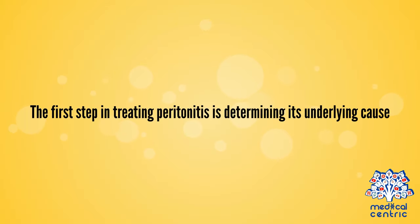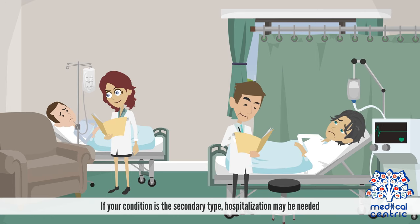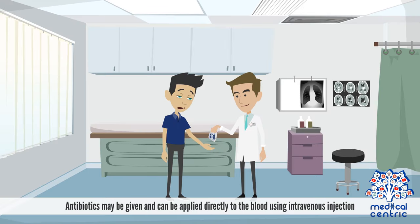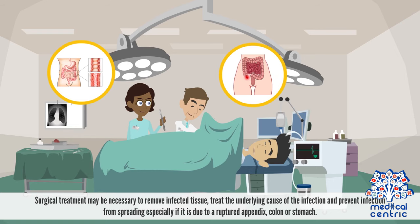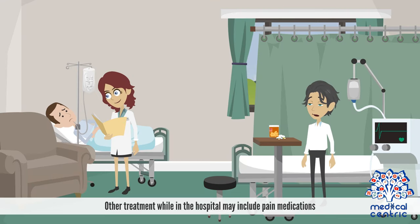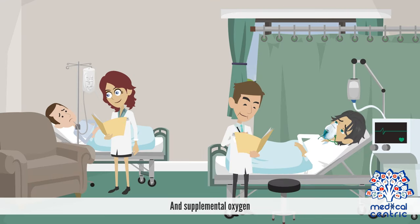The first step in treating peritonitis is determining its underlying cause. If your condition is the secondary type, hospitalization may be needed. Antibiotics may be given and can be applied directly to the blood using intravenous injection. Surgical treatment may be necessary to remove infected tissue, treat the underlying cause of the infection, and prevent infection from spreading, especially if it is due to a ruptured appendix, colon, or stomach. Other treatment while in the hospital may include pain medications and supplemental oxygen.